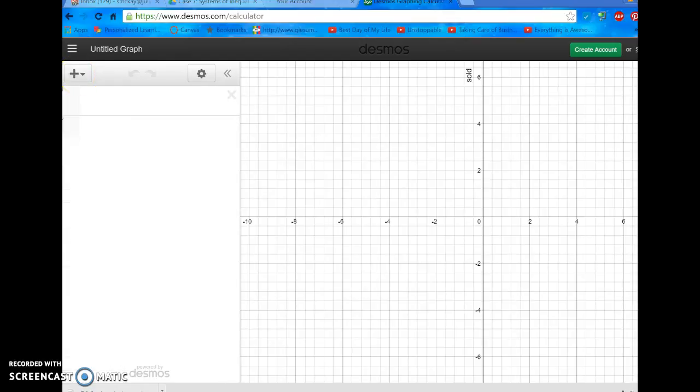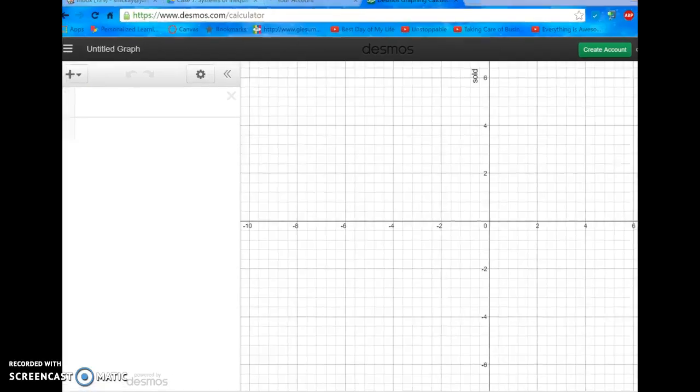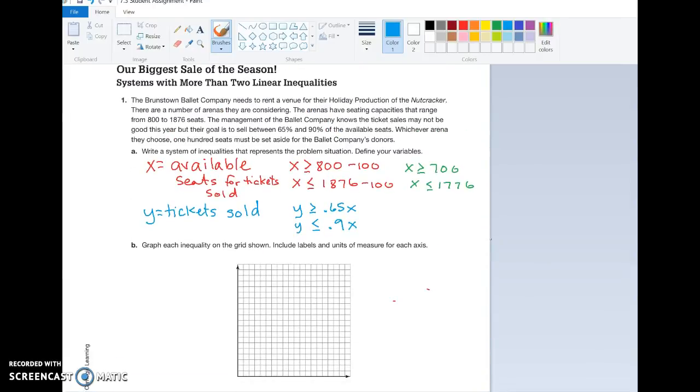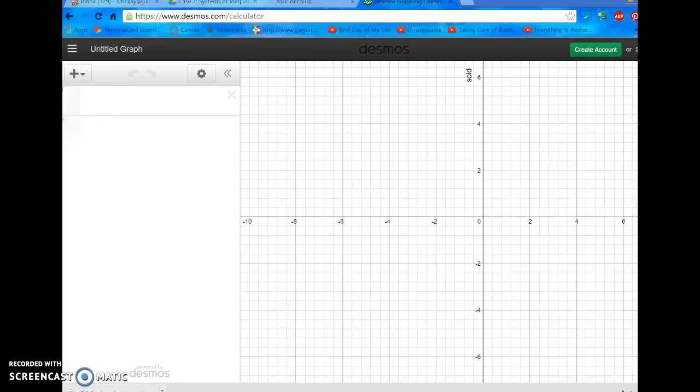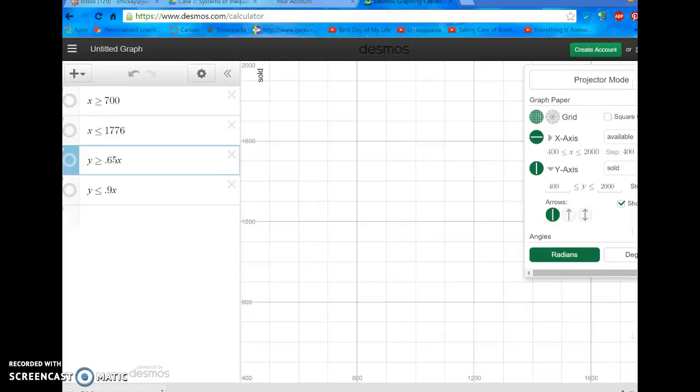So I have some inequalities. Let's remember what they are. So remember that I have X is greater than or equal to 1,700, X is less than or equal to 1,776, Y is greater than or equal to 0.65X, and Y is less than or equal to 0.9X. And I'm going to put in all four inequalities, type them in and see what I get, alright? I went back into my settings again, the little wrench. And I did change my X minimums and maximums to X is greater than or equal to 400 and X is less than or equal to 2000 for both my X and Y so that I could get zeroed in a little bit more on the graph, the area of the graph that I wanted to do. So you might want to do that as well.